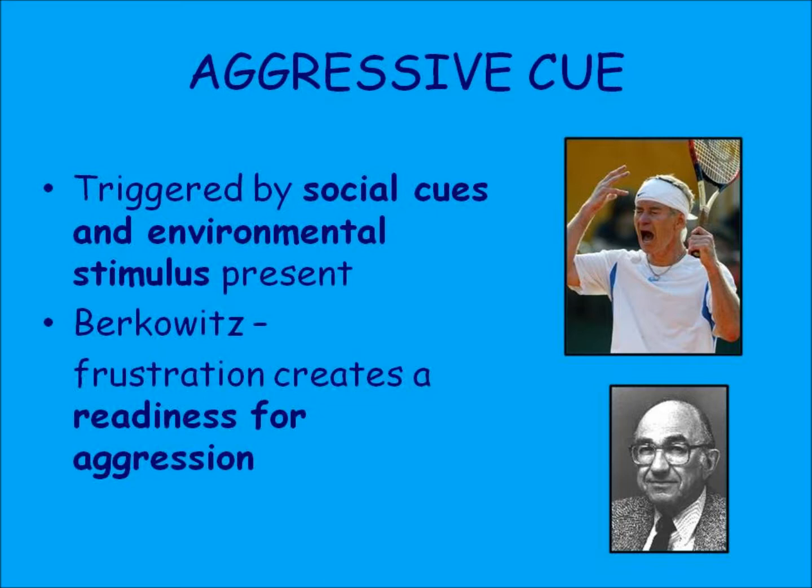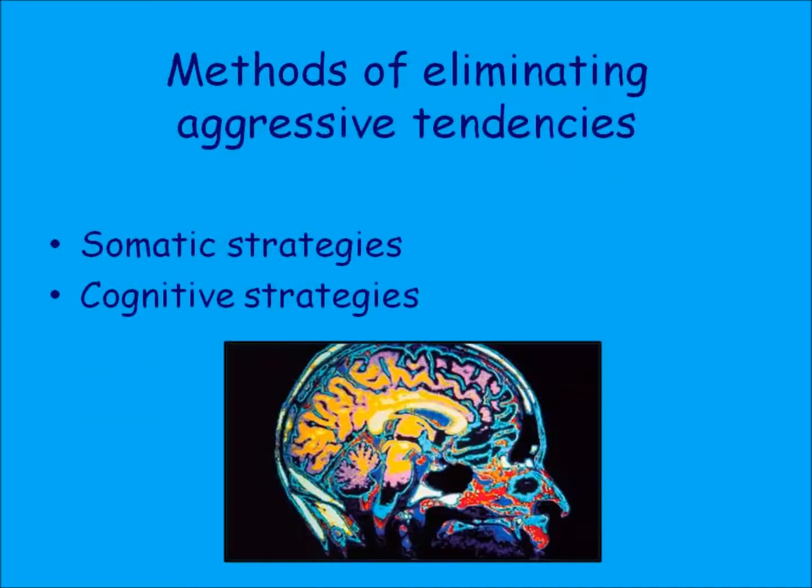These cues could be perceived as unfairness or just the nature of the game. Social learning and frustration aggression are the two theories most favoured by psychologists. There are two ways of eliminating aggression: cognitive and somatic strategies.